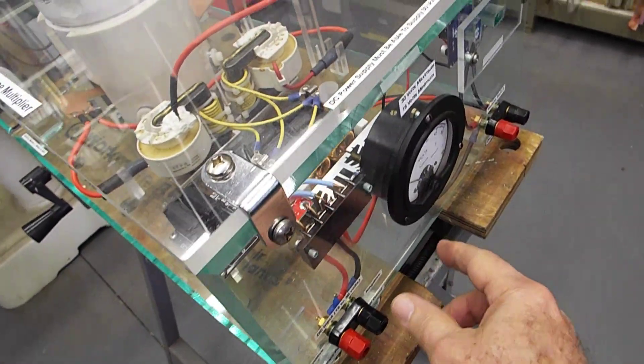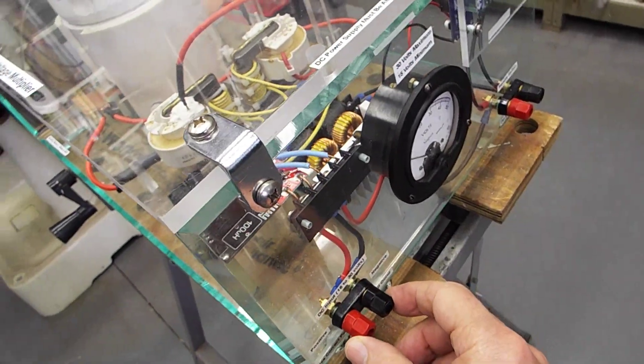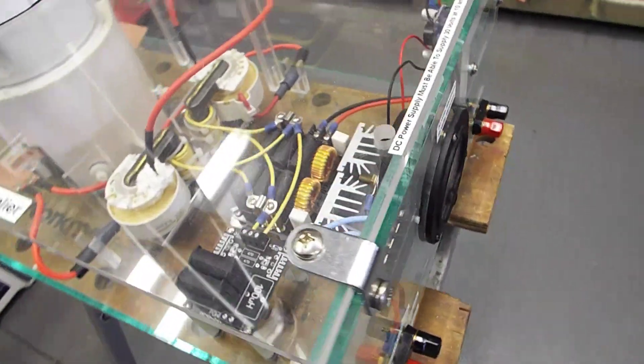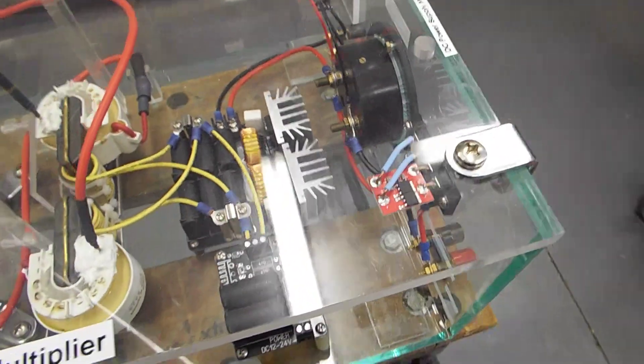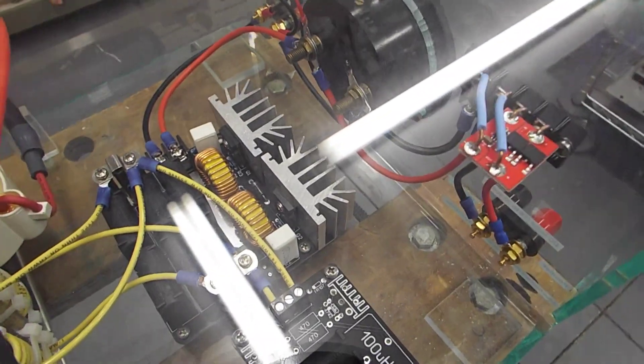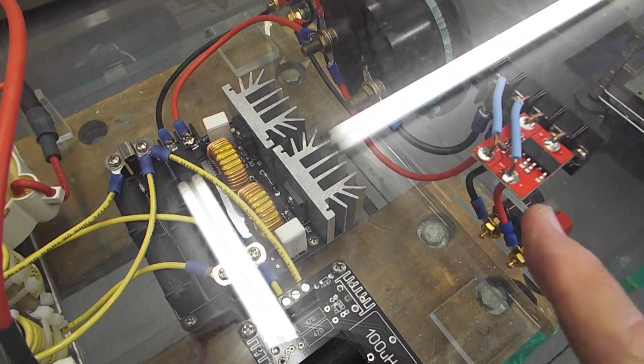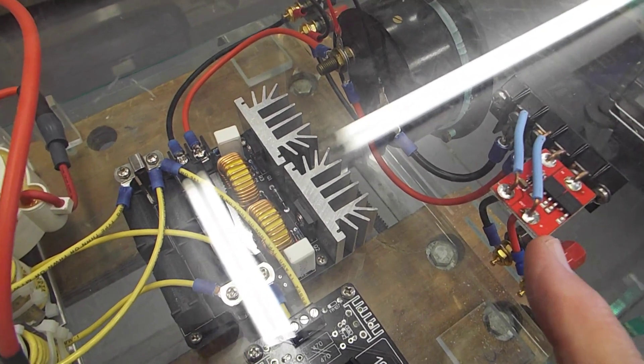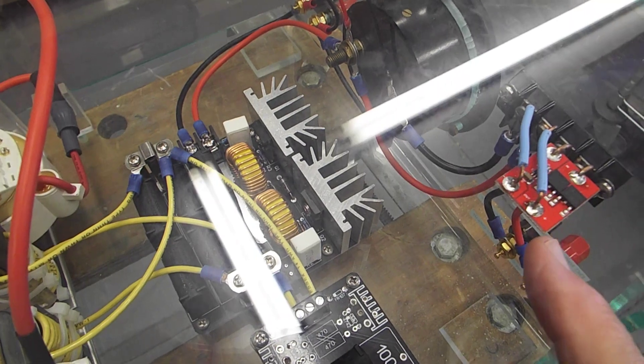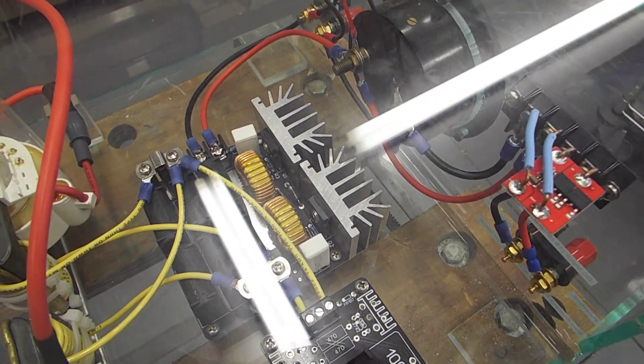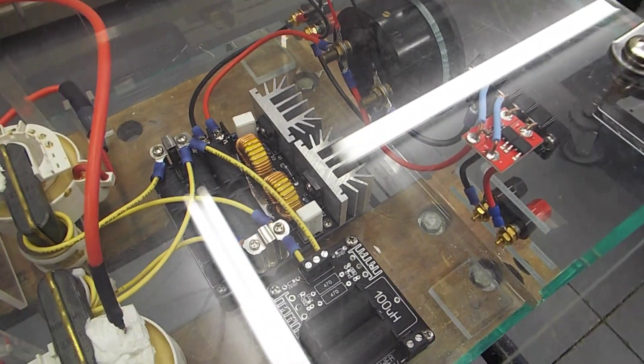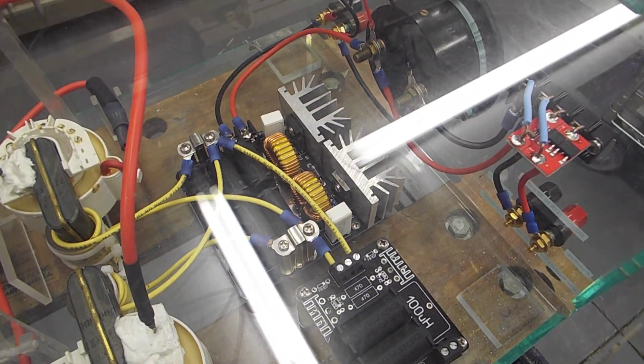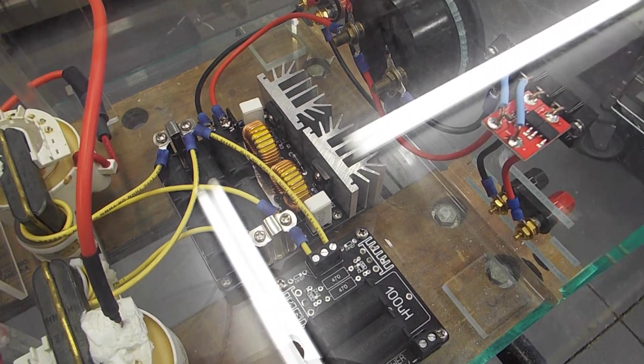The input goes in here on these two banana plugs. There's a voltmeter here to measure the input voltage. And the first place it goes is to this little thing here. And this is called an ideal diode. It's actually a protection device. If somebody accidentally puts the wrong polarity in without this device, it could blow up a lot of the circuitry. So this will prevent that from happening.